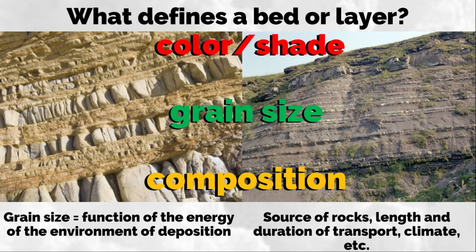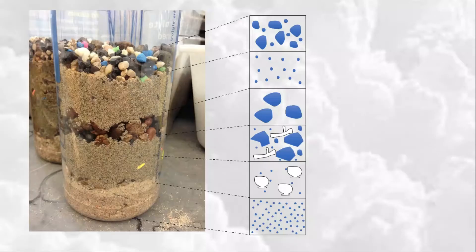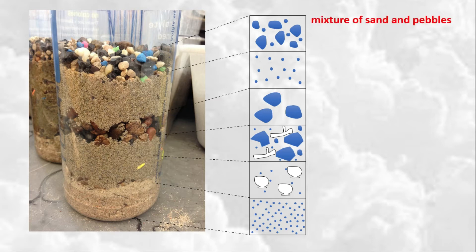Next we have composition. A variety of factors influence the composition of sedimentary rocks, such as the source of rocks, length and duration of transport, climate, volcanism, and others. A change in climate influences rates of weathering — for example, dry versus wet conditions — as well as rates and mechanisms of erosion and transport. This figure shows a sedimentary layering soil model, also called a stratigraphic column or strat column.